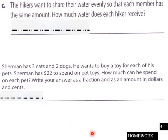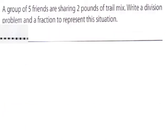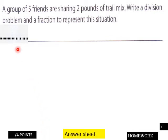And then page four here of our homework. We jump here on the homework. And it's a hiker problem and then three cats and two dogs problem. Write your answer as a fraction as a mountain dollars and cents. And then page five of the homework. A group of five friends were sharing two pounds trail mix. Write a division problem and a fraction to represent the situation which pertains back to the explore question in the lesson.